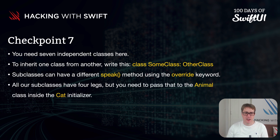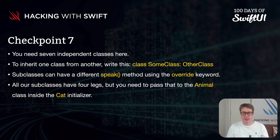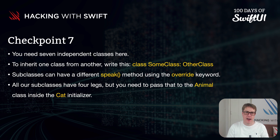And finally, all our subclasses have four legs — corgi, poodle, lion, Persian — four legs. But you still need to pass that to the animal class inside the cat initializer. That's all the hints. Go ahead and give it a try now, and I promise you, you will learn along the way.